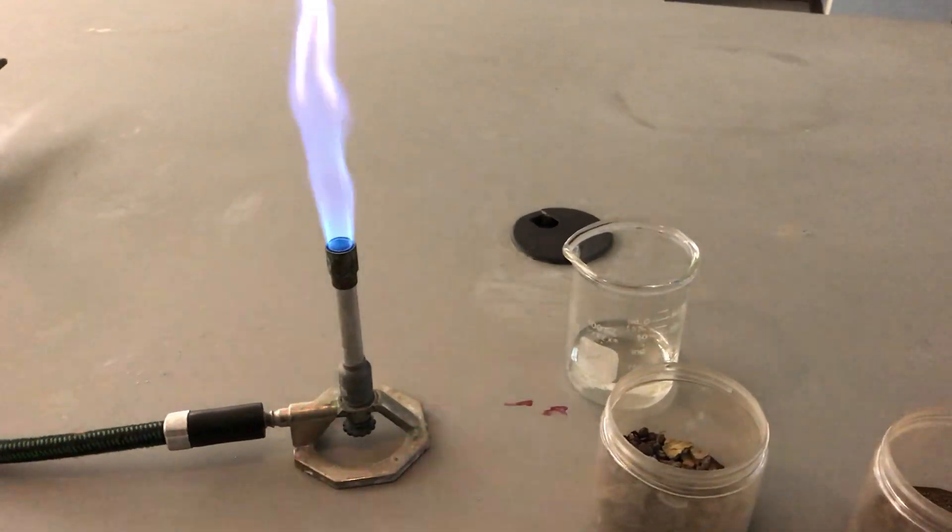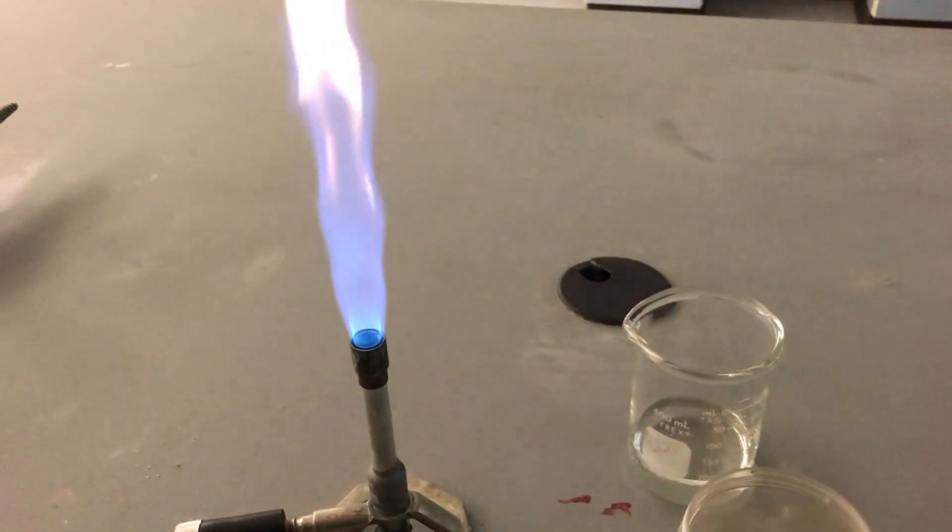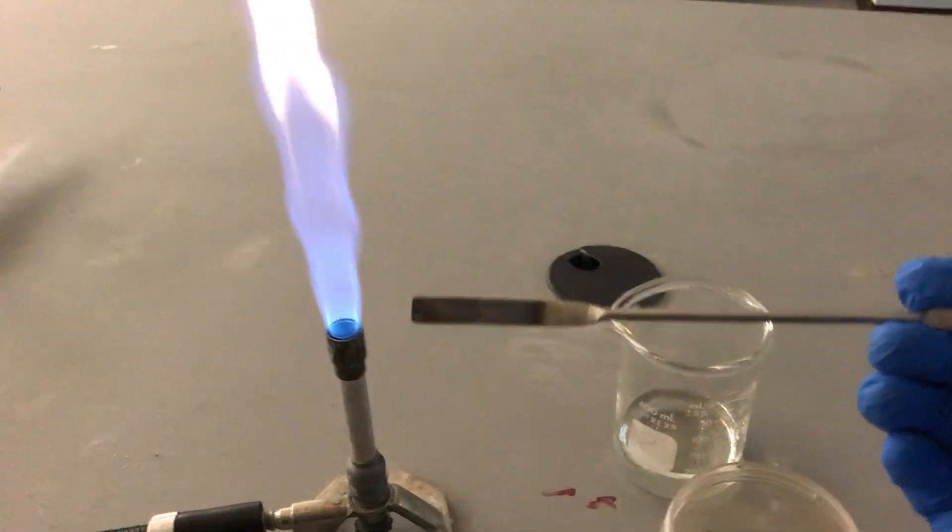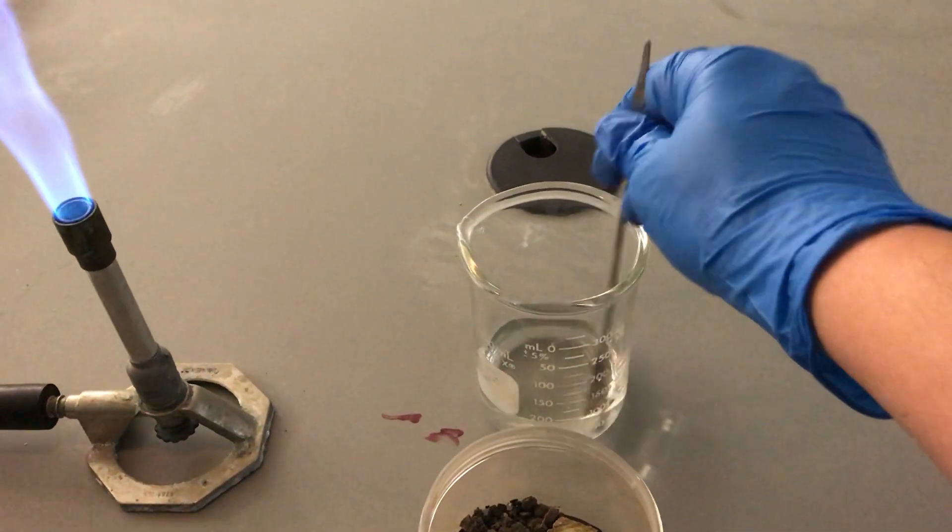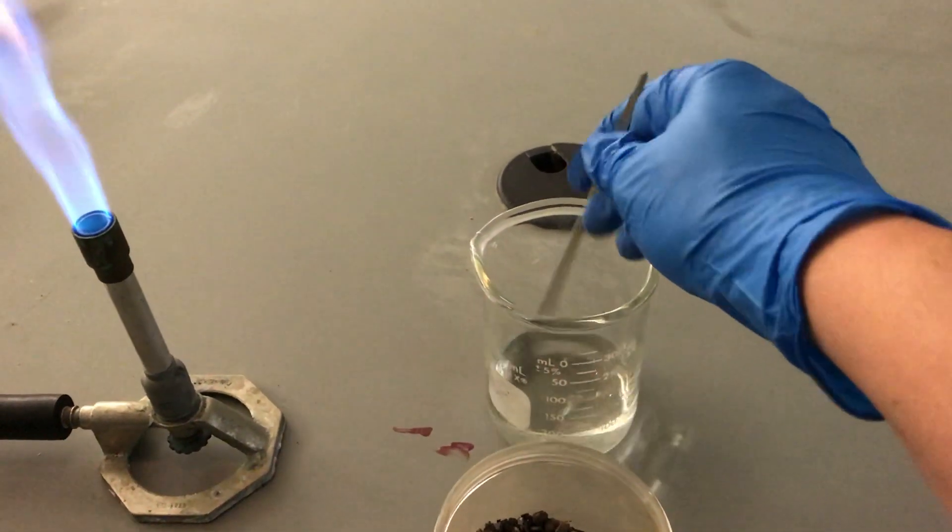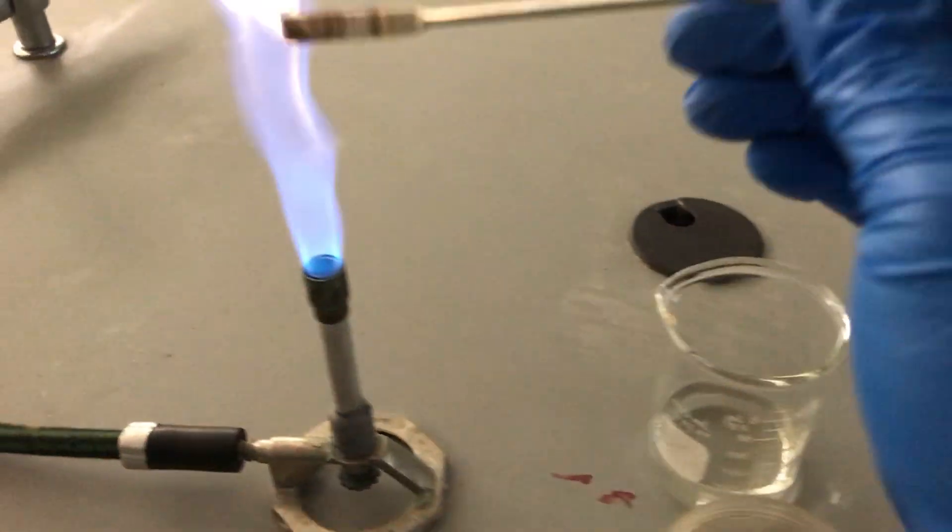So how do we conduct a flame test? Well first you need a spatula to sample your soil with. Before we use it though, we're going to make sure that it is completely sterilized and free of any contamination. So we're going to dip it into our nitric acid, like so, stir it around a bit, and then we are going to flame it off.